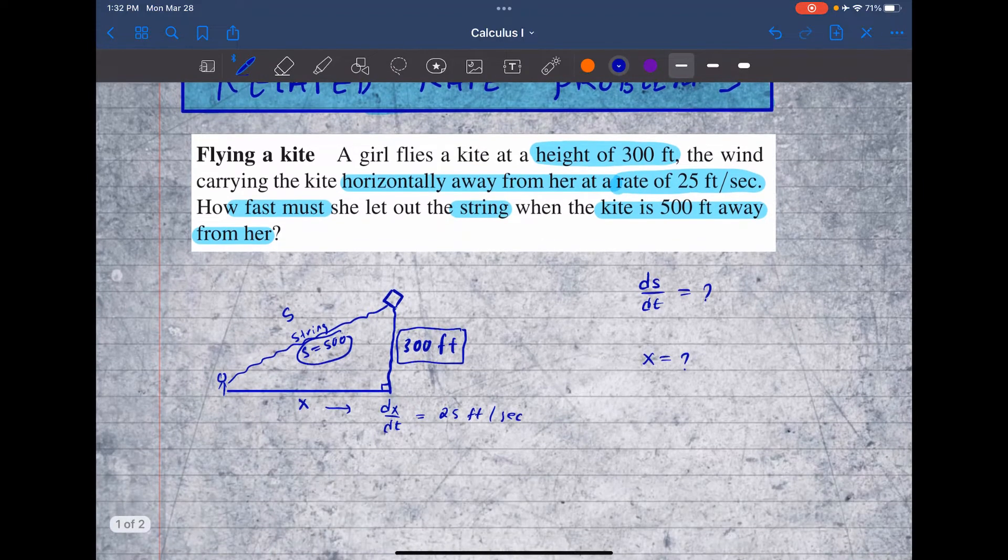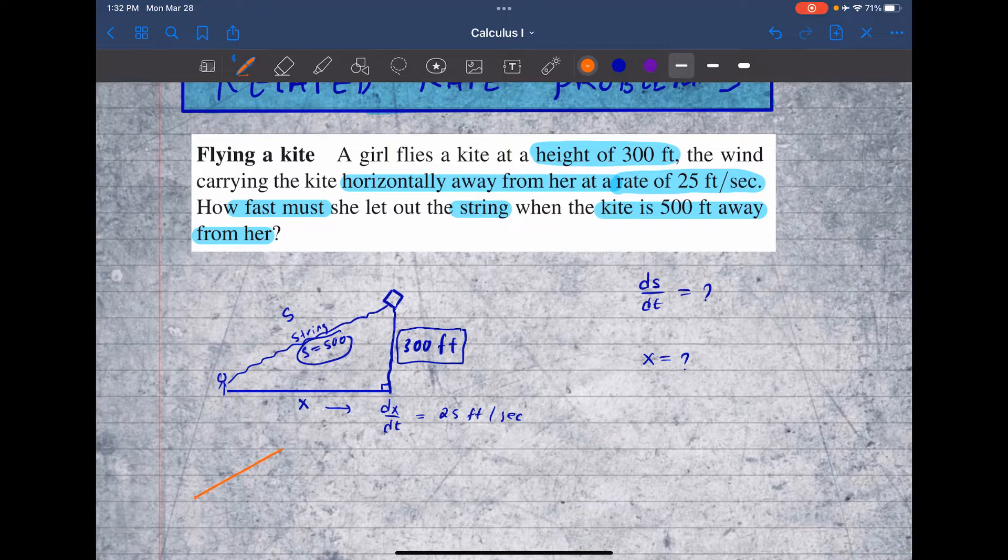So the way we're going to find x is by simply using Pythagorean theorem. So you can imagine there is a triangle here. Let's redraw the picture. So you can see why it's okay to use Pythagorean theorem. I know this is 300. And I know this is 500. So I'm looking for this right here. So let's use Pythagorean theorem.